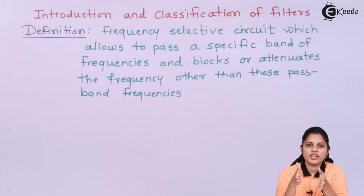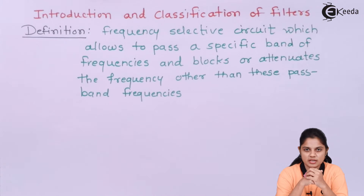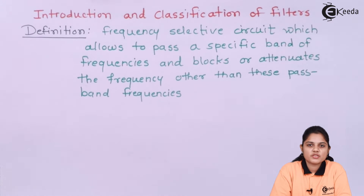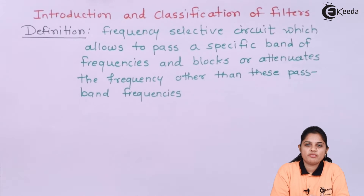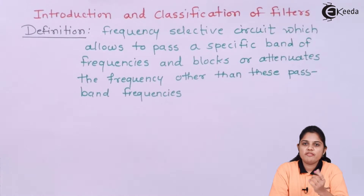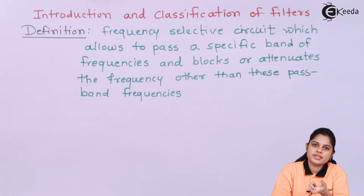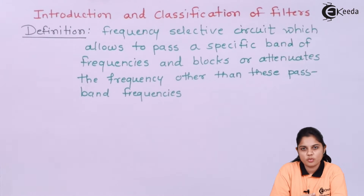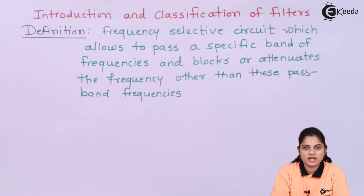Now you have different frequency ranges for different types of signals. A filter can be a low pass filter or a high pass filter. If it passes low frequencies it is a low pass filter, and if it passes high frequencies while blocking low frequencies, it is known as a high pass filter.